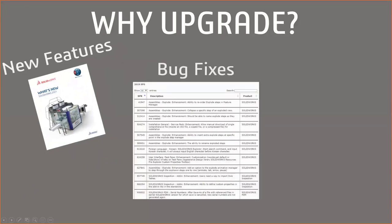Another reason is all the bug fixes. This shows a list of bug fixes from a specific service pack of 2019. These are SPRs — bug reports that customers have sent to support, which get escalated to SolidWorks and land on a developer's plate. These SPR numbers go back to the tens of thousands and into the millions. Every service pack update has those bug fixes. If you're attached to an SPR, you get an email telling you it's been fixed in a specific future version.